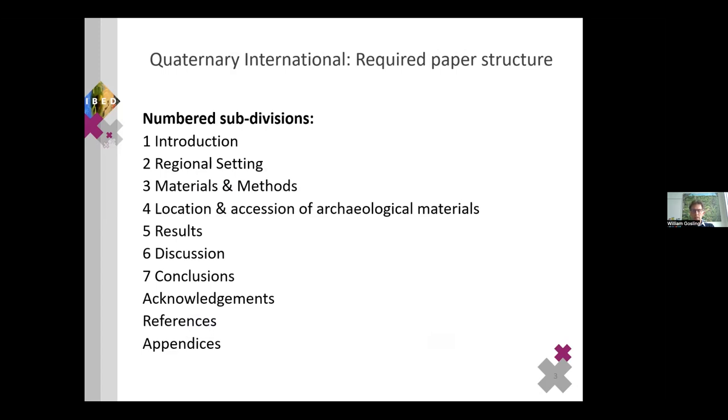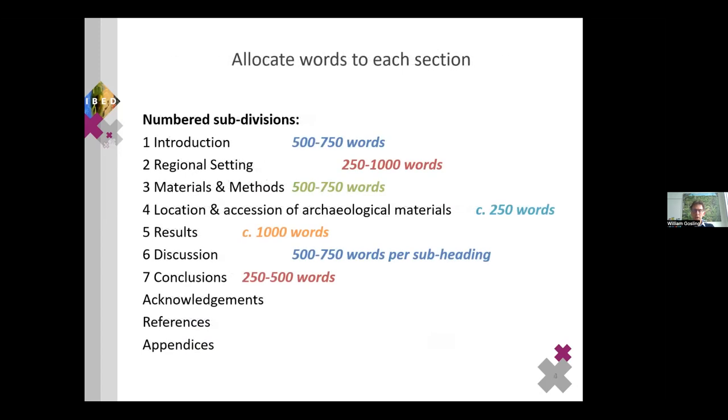There is an option for appendices, including online appendices, where you might have additional tables, information, data sets that relate to your paper, but don't fit within the regular part of the paper. When I'm structuring any sort of paper, I always try and set myself a series of targets for each of the sections. Define the sections. How many words am I going to write within each of these different subsections? And that helps me to create a balanced paper.